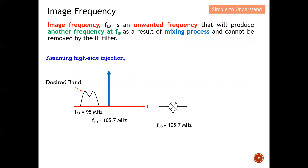Let's recall what high side injection is. We compare FRF and FLO — if FLO is at a higher frequency compared to FRF, we call this high side injection. For example, in this case we want to listen to Class 95, which broadcasts at 95 MHz.